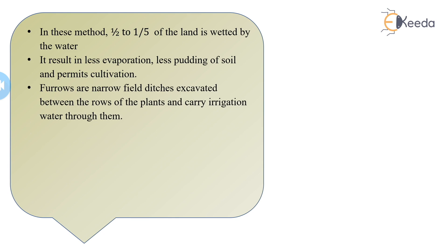What is exactly furrows? Furrows are narrow field ditches excavated between the rows of the plants and carry irrigation water through them. Generally, the length of furrows may vary from 3 meters for garden crops to 500 meters for field crops. The common length being 100 to 200 meters only.